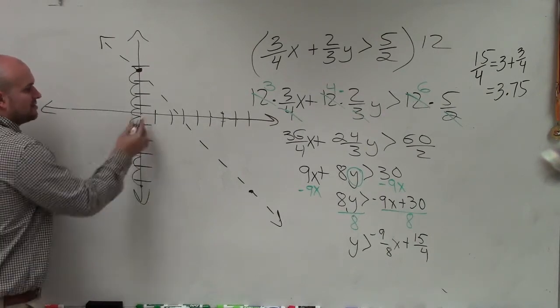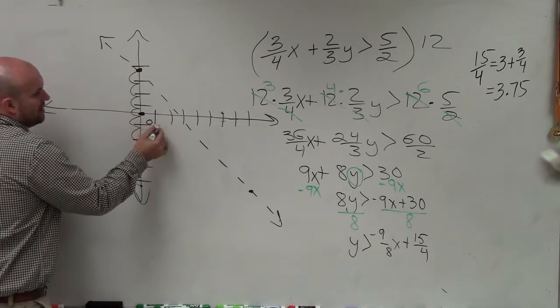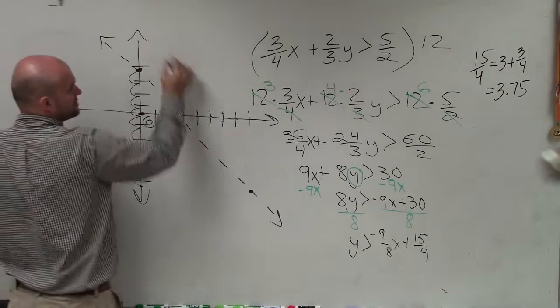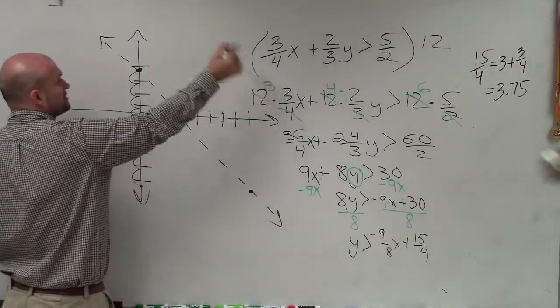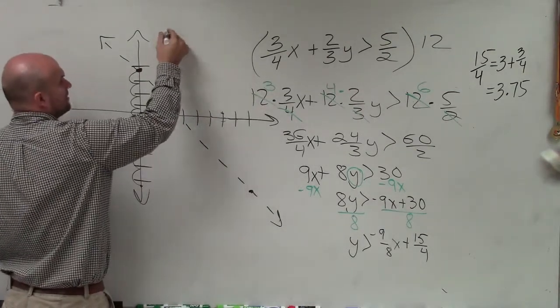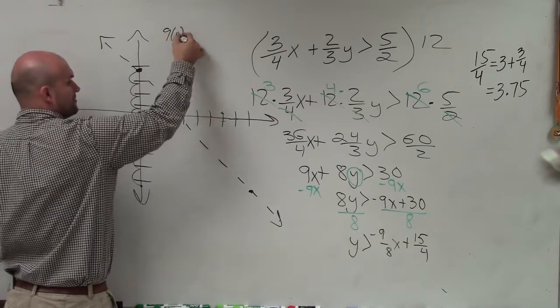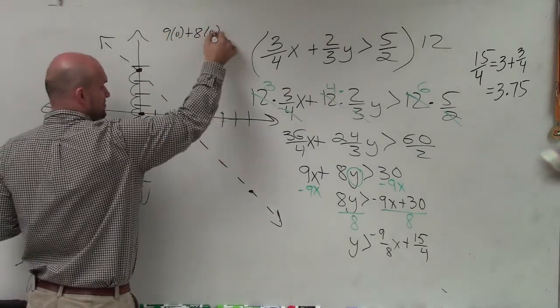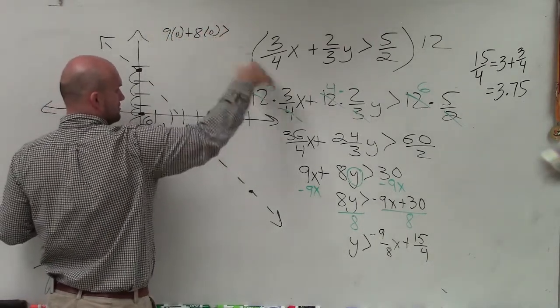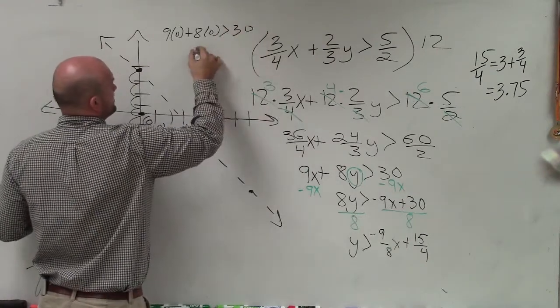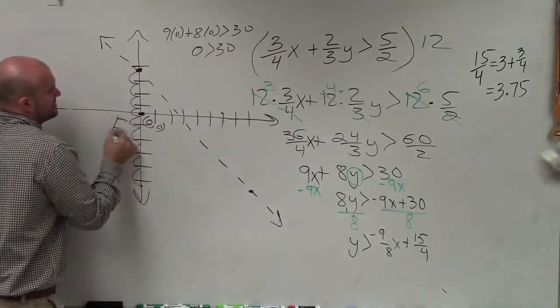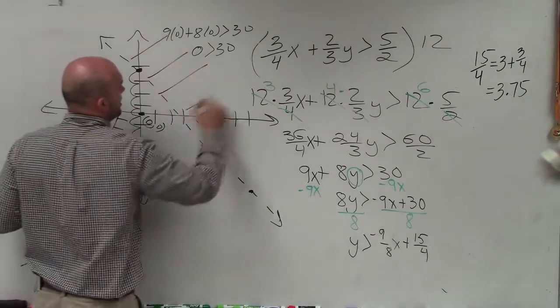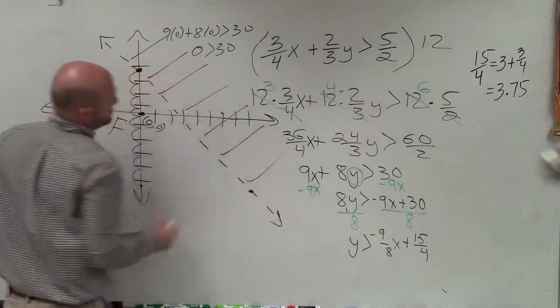Now I need to determine my shading. So the best point to pick is 0, 0, and I'm going to plug 0, 0 in for my equation. And I can go back to my original equation, or I can do it with my fractions. It doesn't really matter. So I can do 9 times 0 plus 8 times 0 is greater than 30. Well, that becomes 0 is greater than 30, and we know that is false. That means all the points above are going to be true.